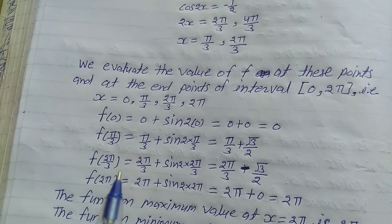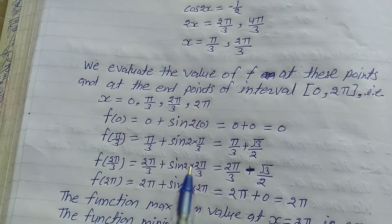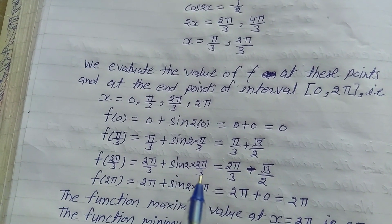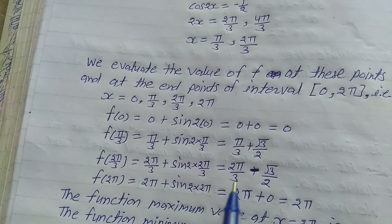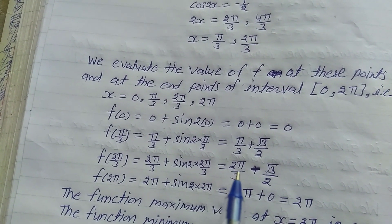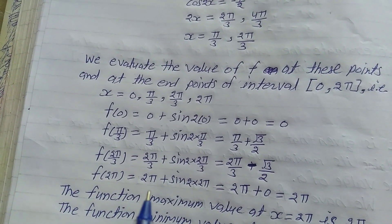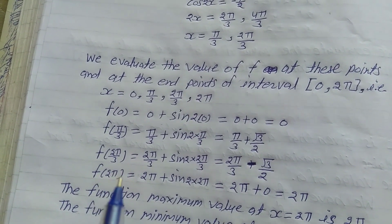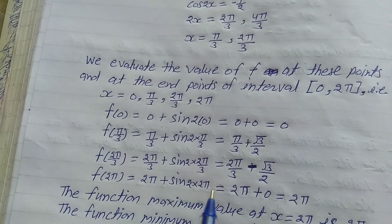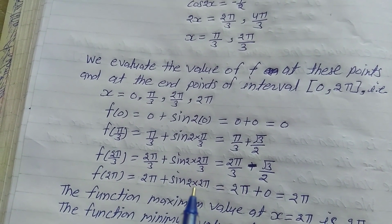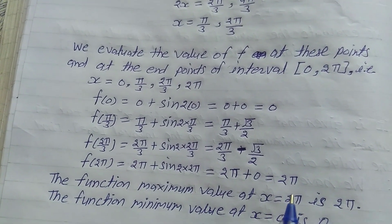f(2π/3) = 2π/3 + sin(2×2π/3) = 2π/3 + sin(4π/3). The value of sin(4π/3) is -√3/2, so f(2π/3) = 2π/3 - √3/2. f(2π) = 2π + sin(2×2π) = 2π + sin(4π) = 2π + 0 = 2π.